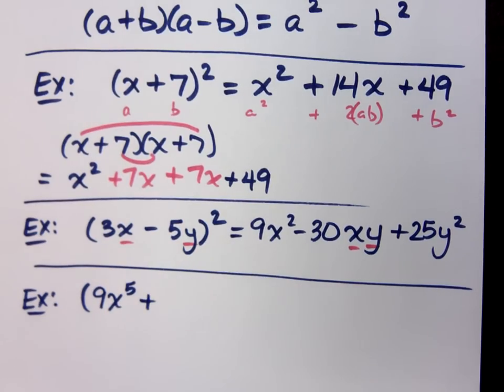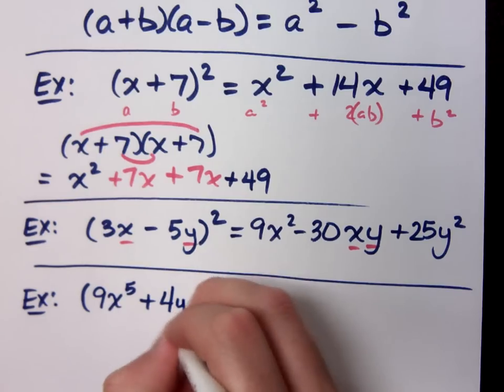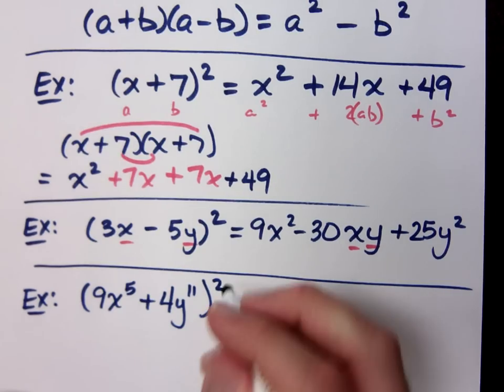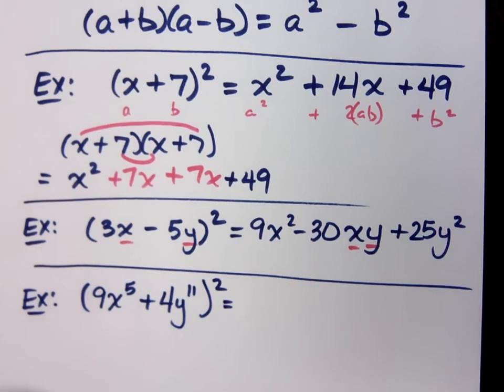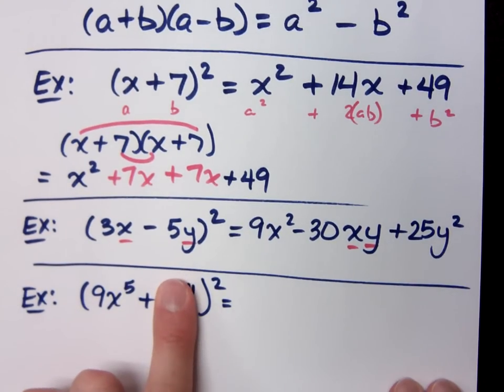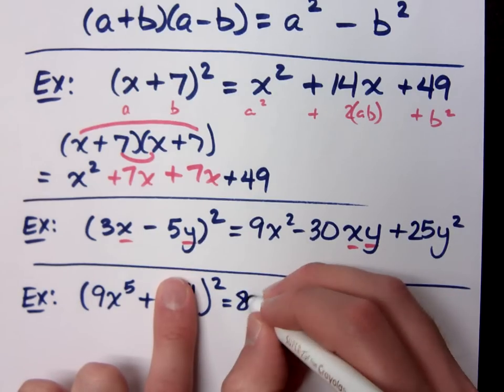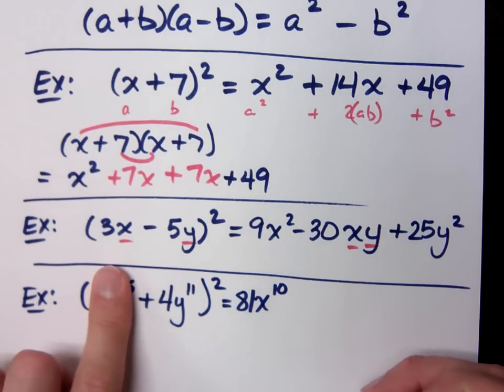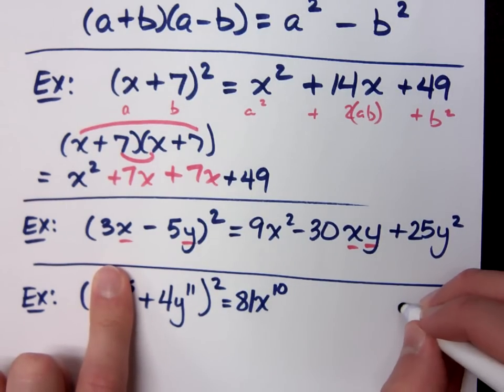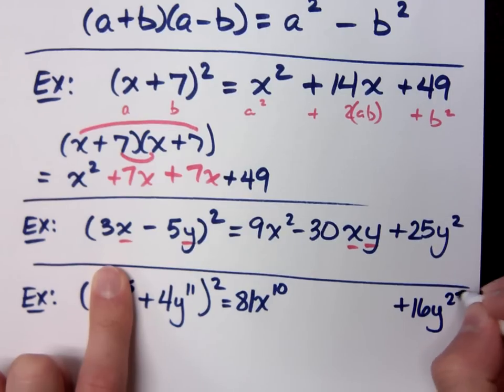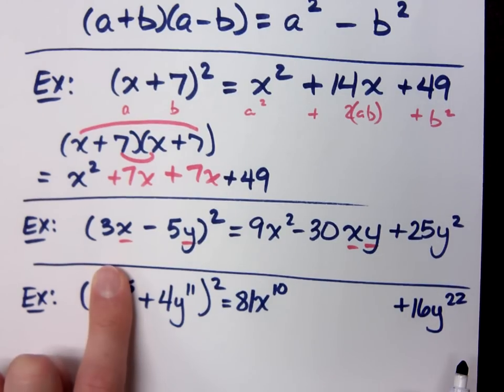9x^5 plus 4y^11 squared. If you square, if you do this piece right here, 81x^10, go ahead and get the last guy, because I know you will. 16y^22. What's 4 squared? 16y^22, right? Is everybody with me?